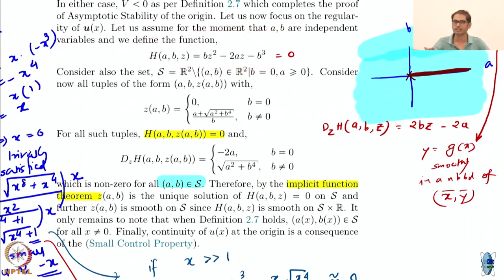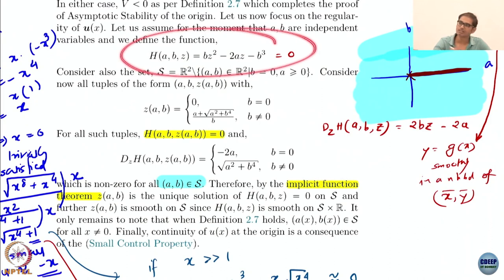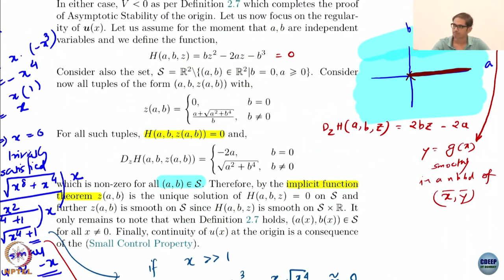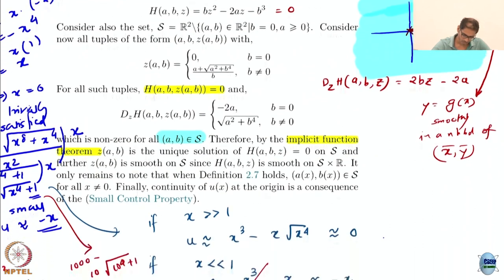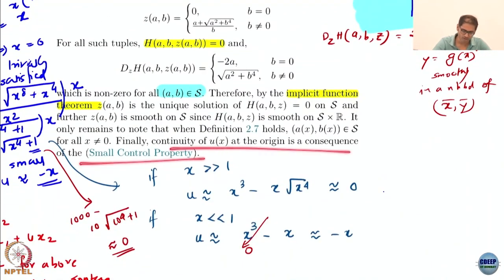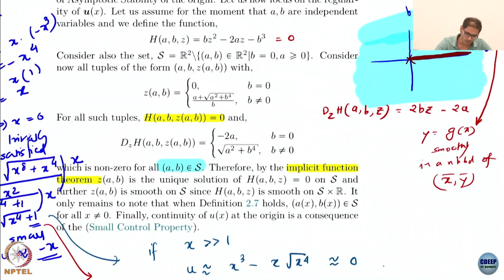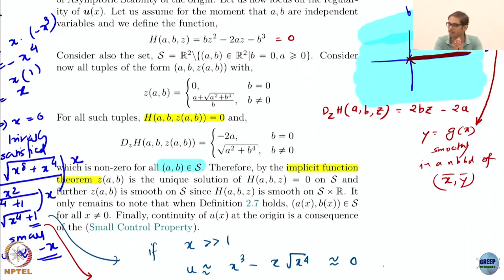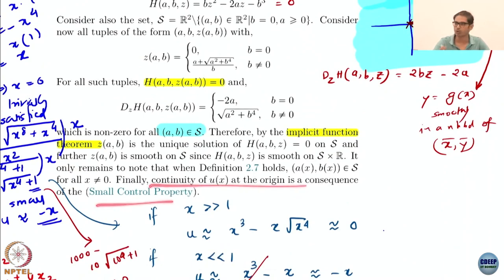Once you construct H smartly, all you have to prove is that the solution is what you want to show is smooth, and the Jacobian — or first partial derivative — is non-zero or full rank. That is it, and we have done that. Continuity at the origin is anyway a consequence of the small control property. This analysis is not for the origin itself, because all CLF definitions are stated for x not equal to 0. The continuity at the origin comes from the small control property.